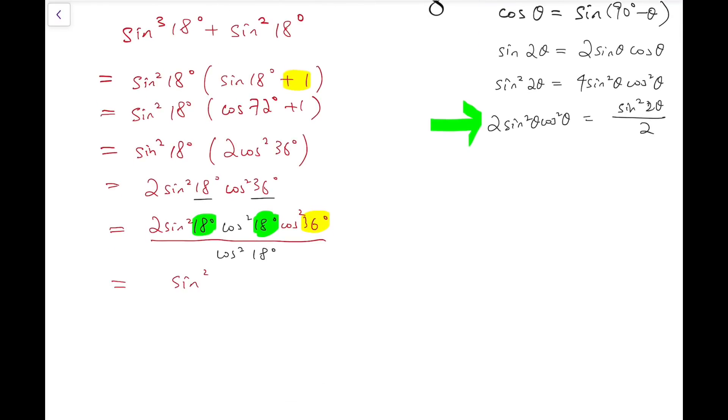Now this is equal to sine squared of 36 degrees halved, and then multiply by cosine squared 36 degrees over the cosine squared 18 degrees at the denominator. Now at this point, we again have two equal angles. And I can make use of the identity again.